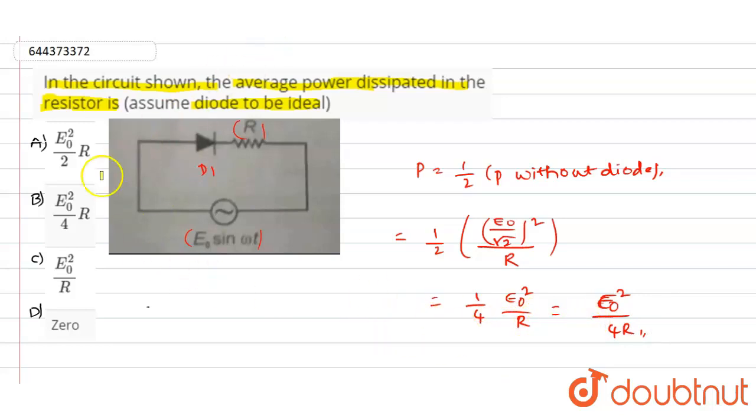So out of these four options, if you look into option B, we have E naught square divided by 4 into capital R. So option B is the correct answer for this question. Thank you.